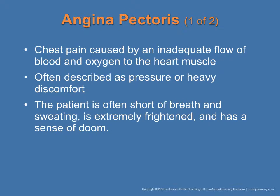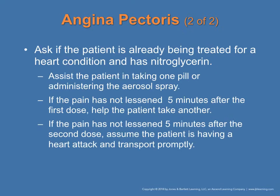Angina pectoris is chest pain caused by inadequate flow of blood and oxygen to the heart muscle itself. It's described as pressure or heavy discomfort. Patients are often short of breath, sweating, extremely frightened, with a sense of doom. If the patient is already being treated and has nitroglycerin, assist them in taking one pill or spray. If the pain has not lessened in five minutes, help the patient take another — up to three total. If pain persists after the second dose, assume the patient is having a heart attack and transport promptly.